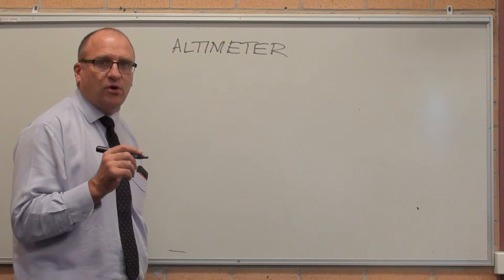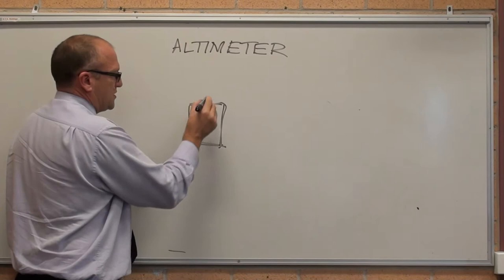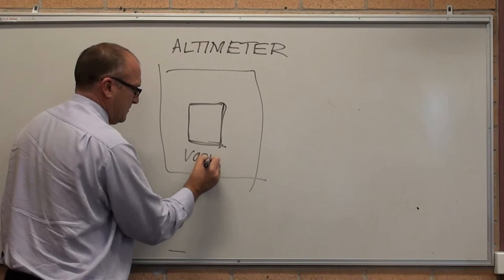Altimeters will go back 50, 60, 70 years before they turned digital. How they used to work is if I get a tin can, seal it. So that's a sealed tin can.